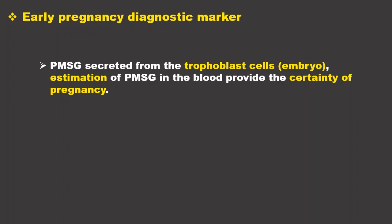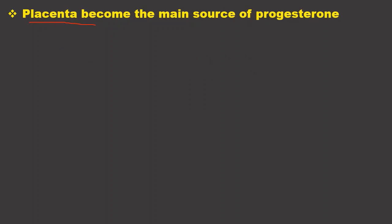PMSG also serves as an early pregnancy diagnostic marker. PMSG is purely secreted from embryo cells — specifically the trophoblast — so when PMSG is secreted and enters the maternal circulation, estimation of PMSG in the blood gives certainty of pregnancy. When there is embryo penetration in the uterus, endometrial cups form PMSG, and detecting it in maternal blood confirms that the horse is pregnant.